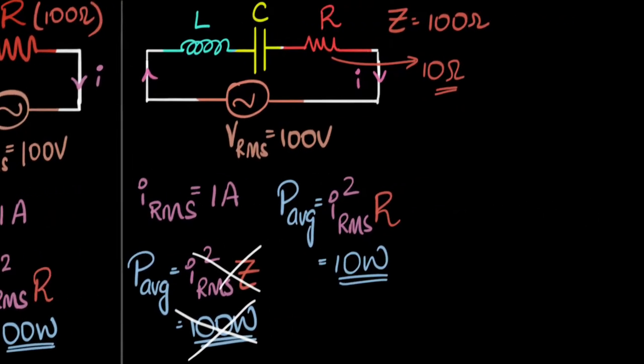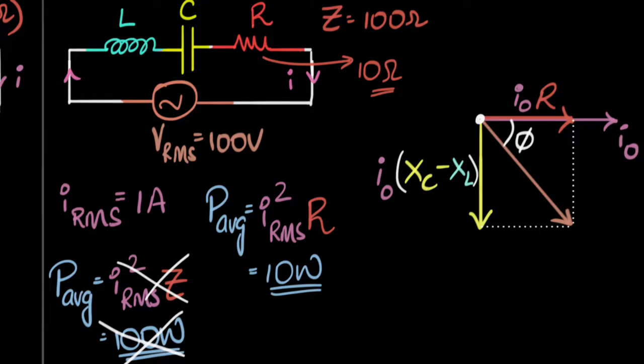We can bring back the phaser diagram that we've seen before. I0 represents the current, then the voltage across the resistor, which is I0 times R, is in phase. The voltages across the inductors and capacitors are 90 degrees out of phase. And if we add all the voltages together, we get the total voltage. We can represent it to be I0 times Z.